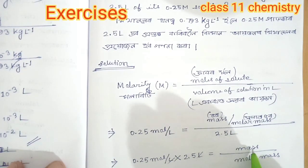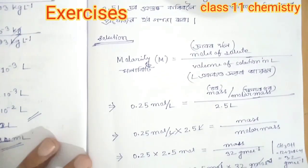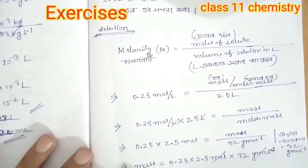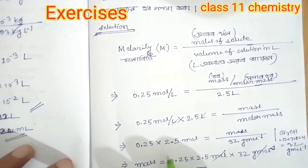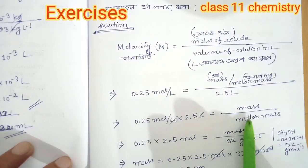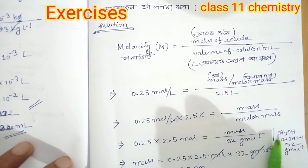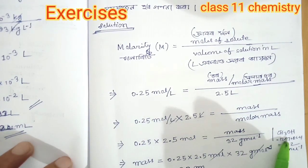You can see it with mass divided by molar mass. It's like mass divided by molar mass — molar mass means methanol.